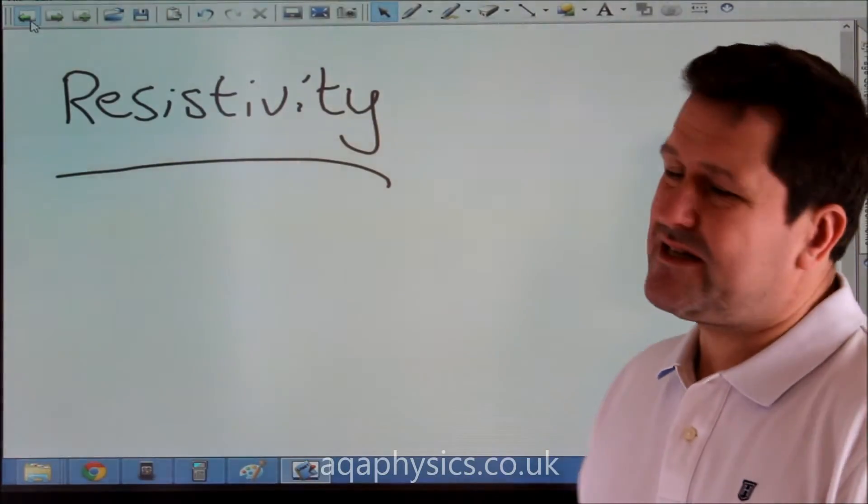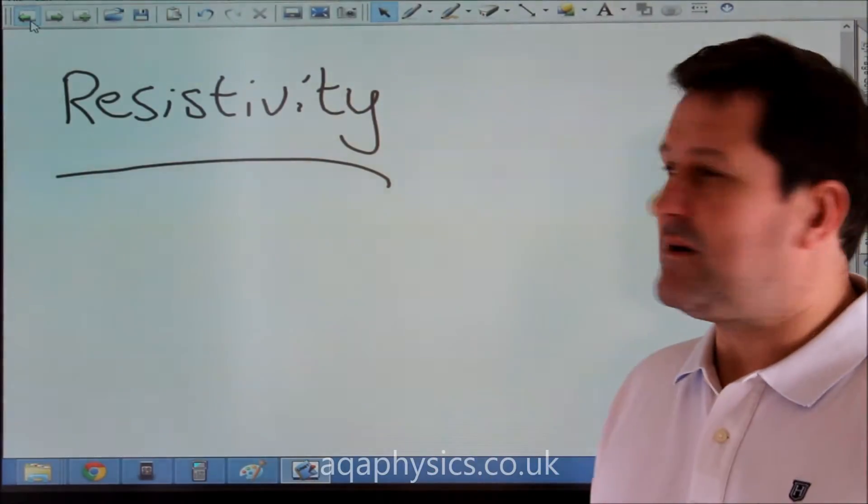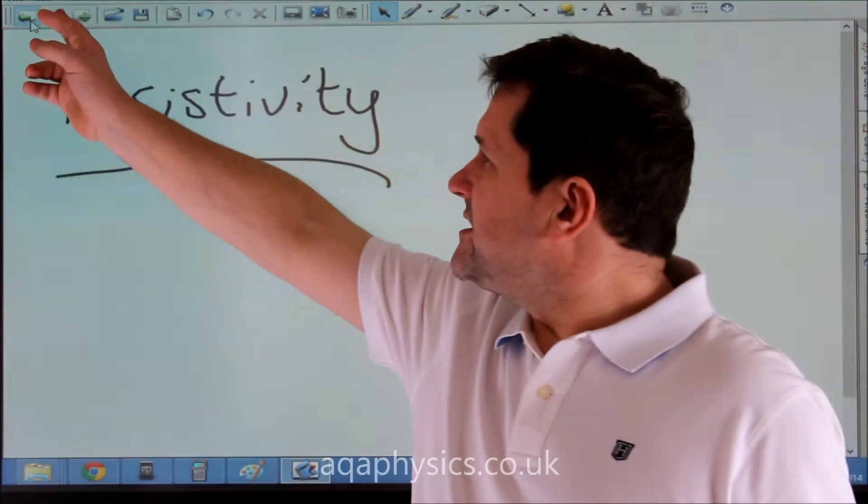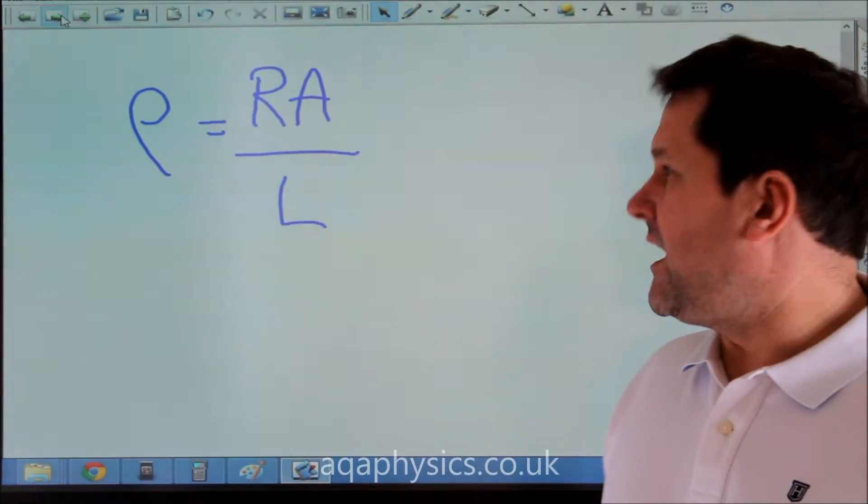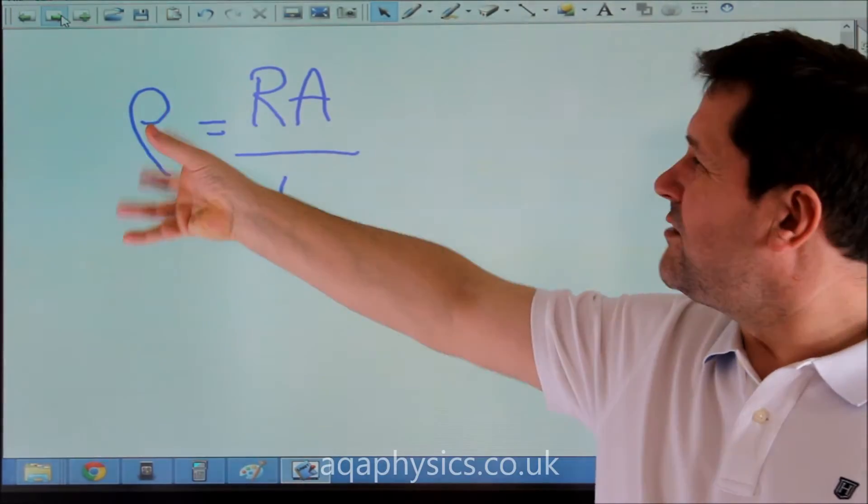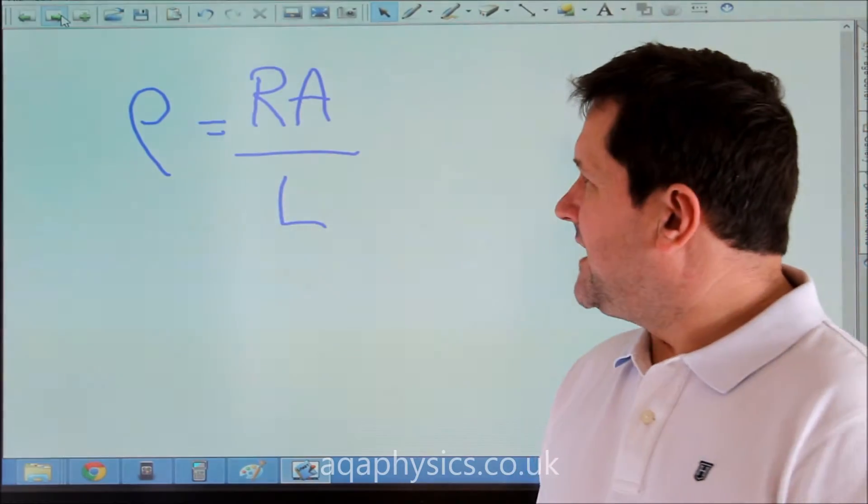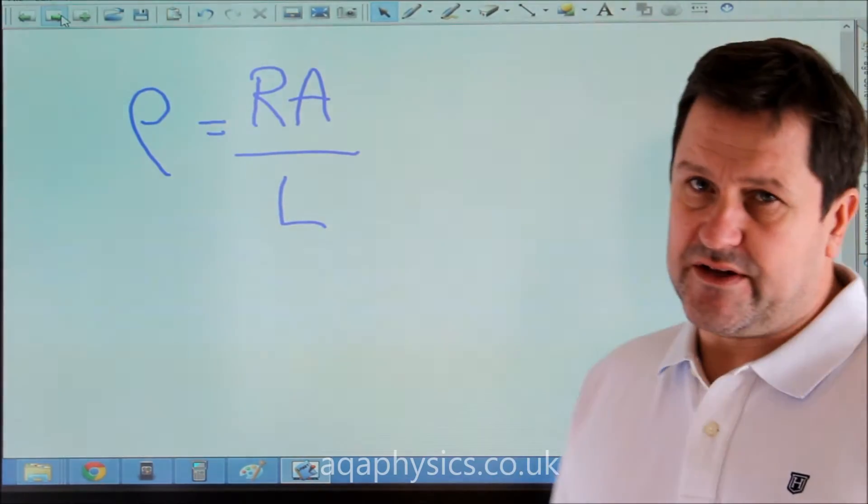Okay, resistivity. You'll probably be asked a question about resistivity. Now this is a property of different materials. Rho stands for resistivity, and it's the relative resistance of different materials.